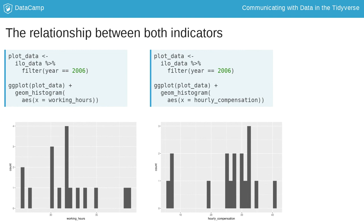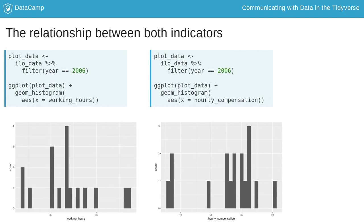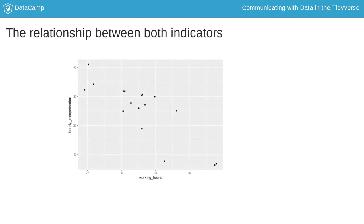However, in order to see the relationship between both variables, we need to use ggplot's point geometry. And this is what you are going to do in the following exercises — you are going to create the scatter plot shown here, using ggplot's geom_point function.